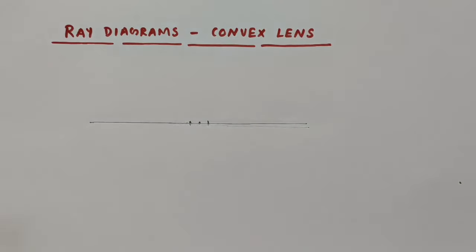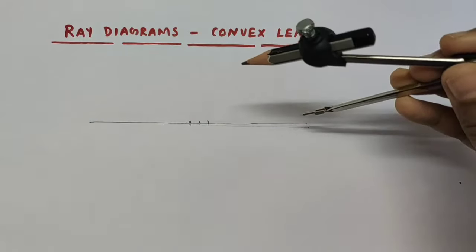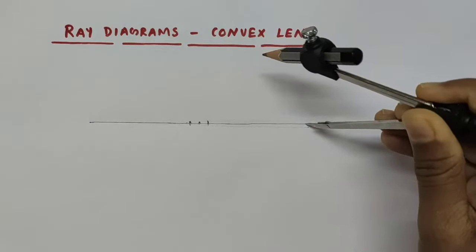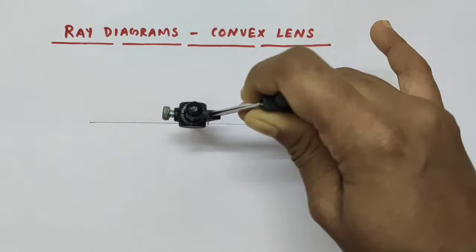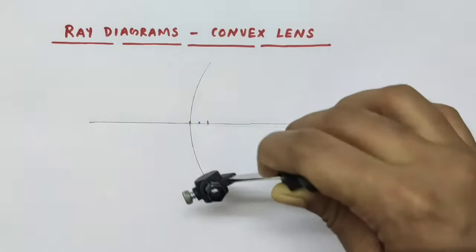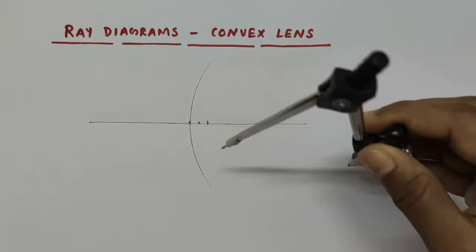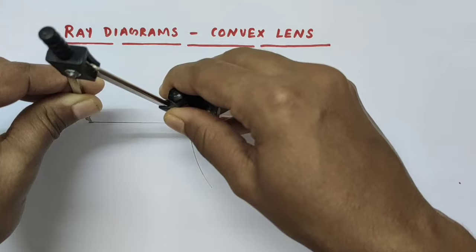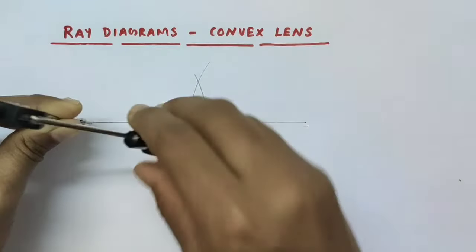Now take your compass and keep it on this straight line. First keep the compass at the right end — the rightmost end of this straight line — and draw an arc which passes through this point. After that, keep the compass on the leftmost end, then draw an arc which passes through the point you have already marked here. Draw an arc like this.